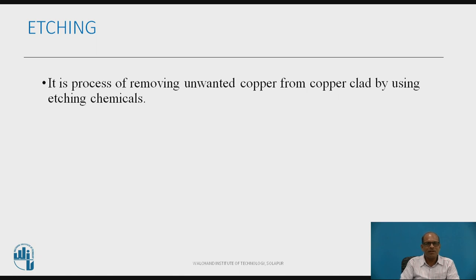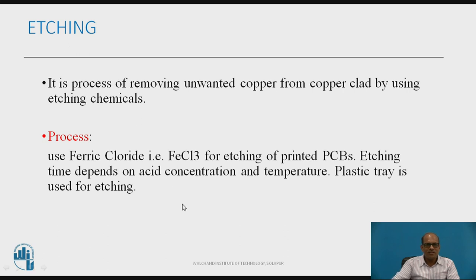The next step in PCB fabrication is etching. Once the acid-resistant image is printed on the copper clad — either by screen printing or photo printing — etching involves removing unwanted copper from the copper clad using etching chemicals. The chemical generally used is ferric chloride (FeCl3). PCBs are immersed in the FeCl3 solution. Etching time depends on the concentration of FeCl3 and temperature. For small batches, a plastic tray is used; for large batches, an etching machine with spray etchant and a conveyor belt is used.